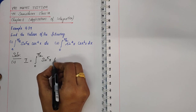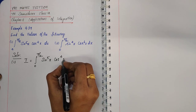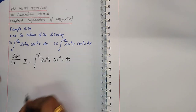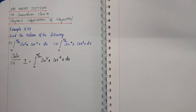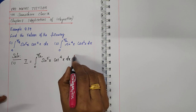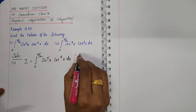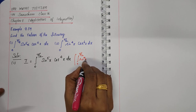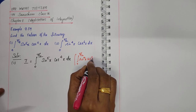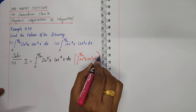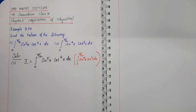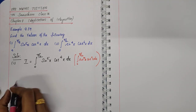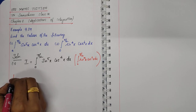This question is of the form integral from 0 to π/2 of sinᵐx·cosⁿx dx. For this type of question, we can use the reduction formula. So first write the reduction formula.